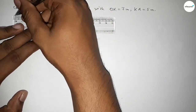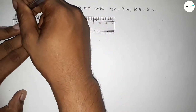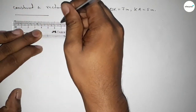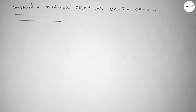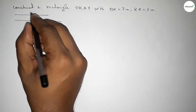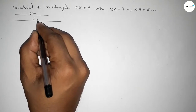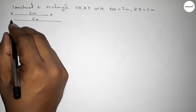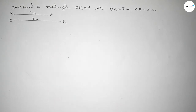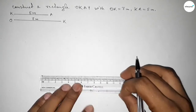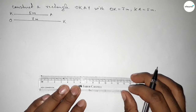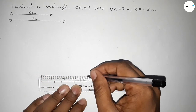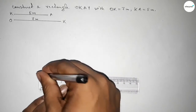First of all, we have to draw two lines: a 5 centimeter line and a 7 centimeter line. This one is 5 centimeters and this one is 7 centimeters. This is the KA line and this one is the OK line. Again, we have to draw the 7 centimeter line here first.